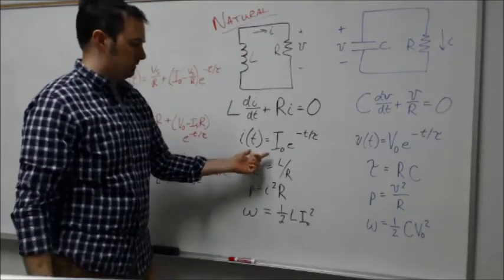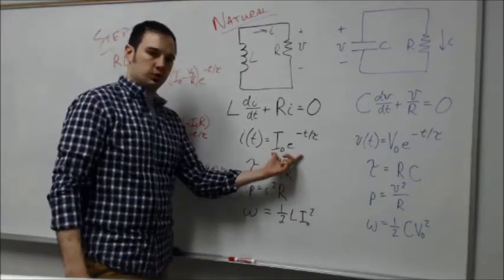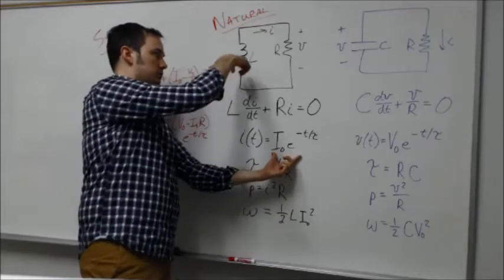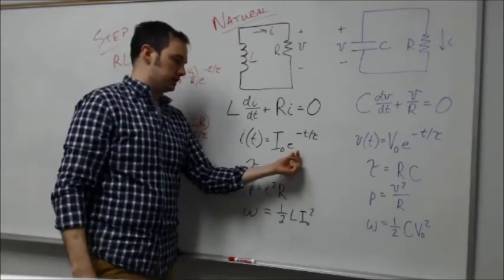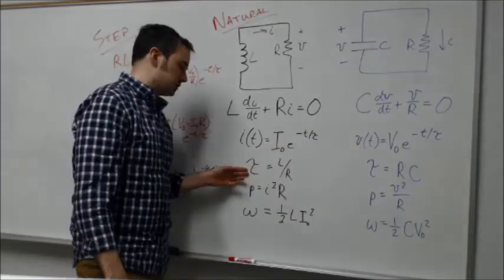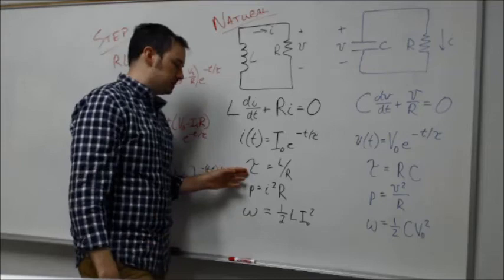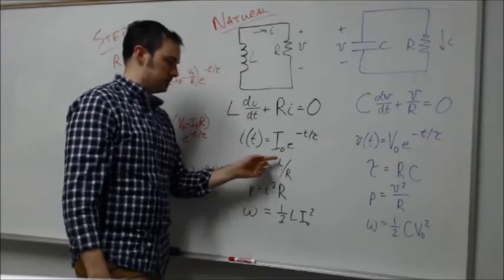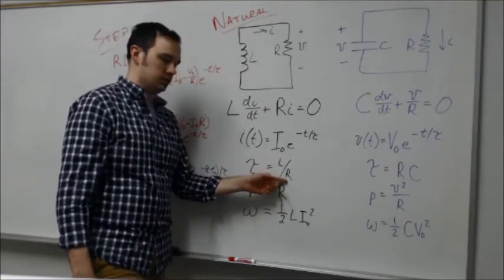I of T is I naught, so the initial current given from the stored energy in the inductor, times an exponential with this decay term which is minus T over tau. Tau is this time constant. In the case of the RL circuit, the tau term is the inductance over the resistance.